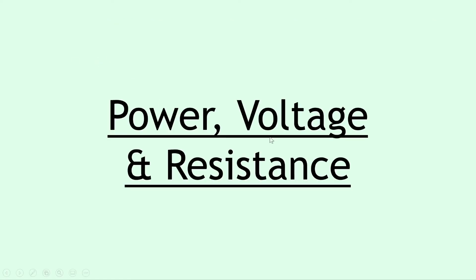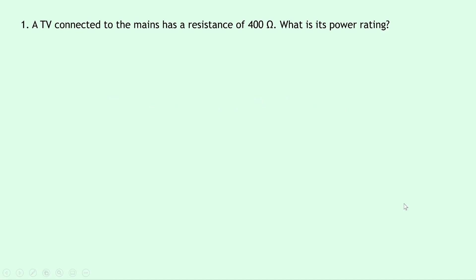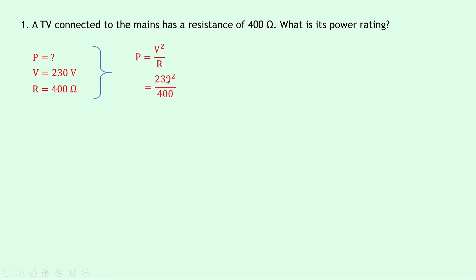Lastly, we'll look at the relationship between power, voltage, and resistance, and we'll do three examples for this. Question one says that a TV connected to the mains has a resistance of 400 ohms. What is its power rating? Notice it says mains, so the voltage is 230 volts. We're trying to find power P, the voltage is 230 volts, and the resistance R is 400 ohms. Our equation is P = V²/R. Substituting gives 230² divided by 400, which gives an answer of 132 watts.